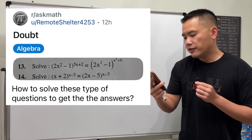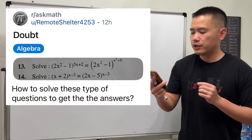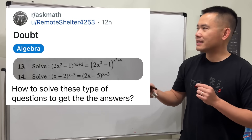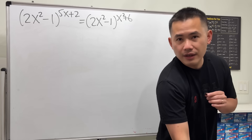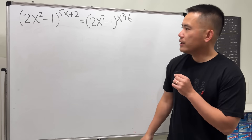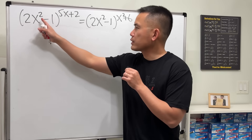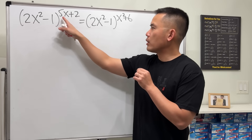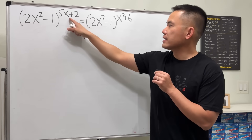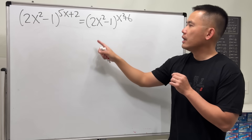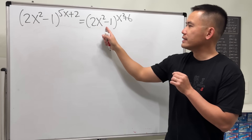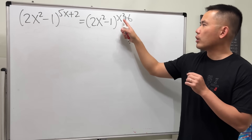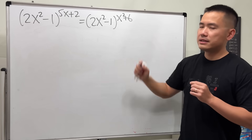Let's have a look at the first equation: we have (2x² - 1) raised to the power of (5x + 2), and that's equal to the same base but to the power of (x² + 6).